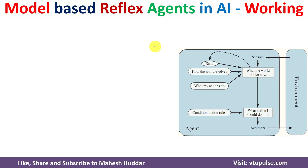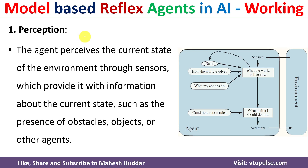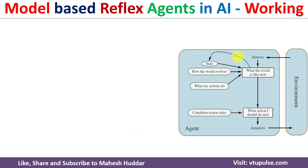The first step is perception. The agent perceives the current environment through the sensors. This information includes the current state of the environment, such as the obstacles, objects, or other agents present in the environment.